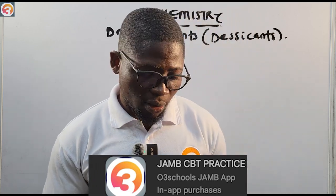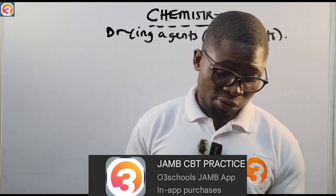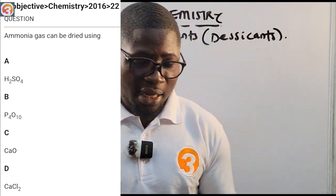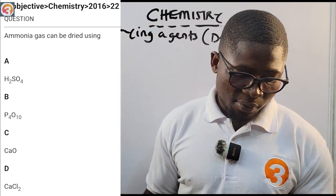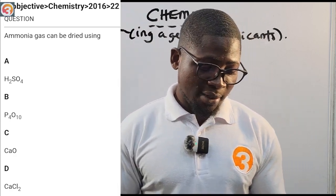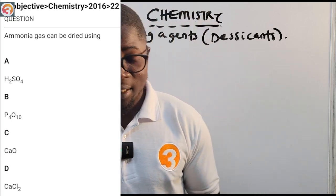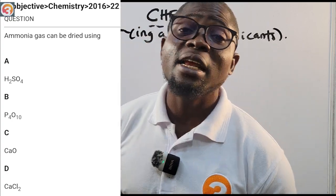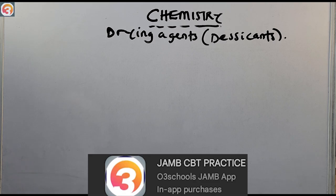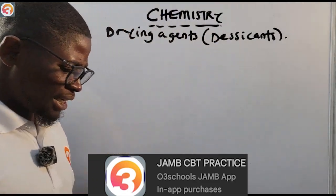This tutorial is brought to you by the Hotel School Jamba. Let's look at a question from the app — a 2016 question number 22. It says: ammonia gas can be dried using A) H2SO4, B) diphosphorus pentoxide P4O10, C) calcium oxide, D) calcium chloride. I'll come back to this question at the end of class, so please do not run away.